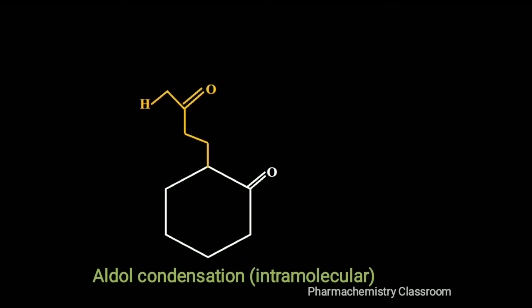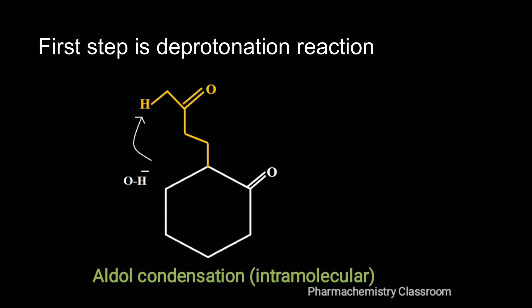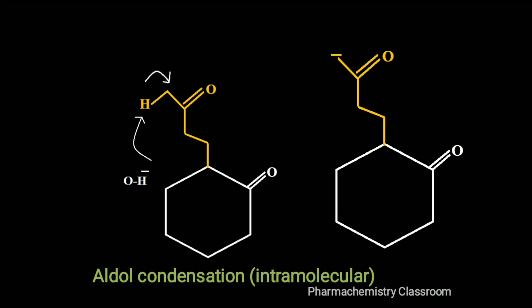The next phase is the aldol condensation reaction of the formed 1,5-dicarbonyl compound. The first step is a deprotonation reaction — a base abstracts the alpha hydrogen to get an enolate; the carbon is negatively charged. The base abstracts the proton and we are getting our enolate.